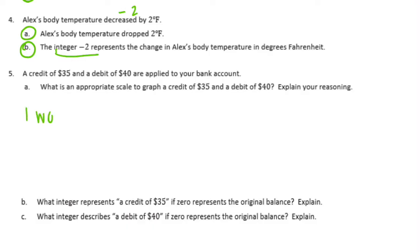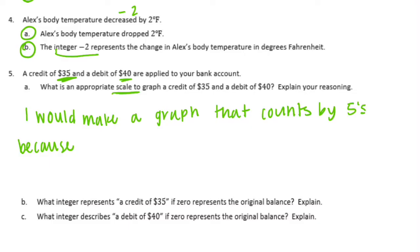My scale is counting by fives. Let me get rid of this period so I can explain. Because the numbers we have are 35 and 40, and they're both multiples of 5, it would be easy to just graph 35 and 40 because it's on the scale.